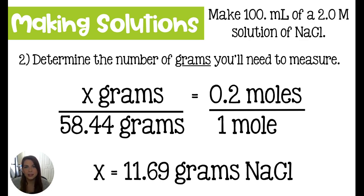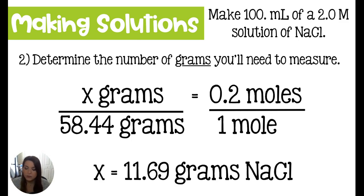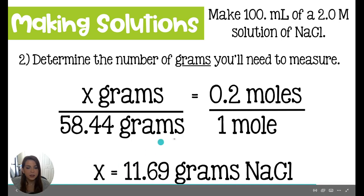Q stands for quantity, M is for mass, and T is for total. You list all your elements, count how many atoms there are, take their mass from the periodic table, find their totals, and add them up. For sodium chloride, you just add the sodium and the chlorine — the molar mass comes out to 58.44 grams per mole. You cross multiply, solve for x, and x comes out to 11.69 grams of NaCl.